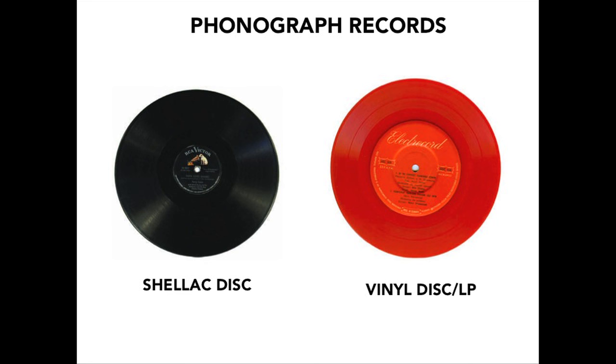Shellac discs were the mass-produced popular audio format from the 1890s up through the 1940s, and after that vinyl discs became increasingly popular — they're obviously still in use now. Both are pretty stable, sturdy formats. You can play a vinyl disc pretty easily today, so it's not something we really consider an endangered format.